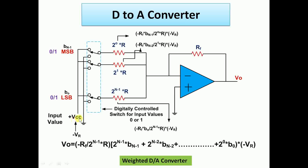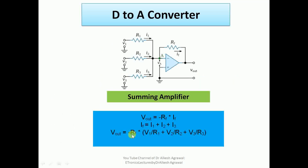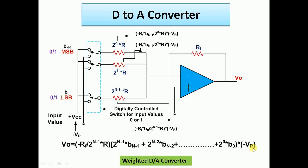The summing amplifier is again used here. For a digital input of 1, the switch connects to +VCC; for 0, it connects to ground. A reference voltage of −VR is used so that, because of the inverting terminal, the final analog output comes out as a positive value. The expression for each arm contributes: for example, the MSB arm gives −RF/(2⁰·R) × BN-1 × (−VR), and the LSB arm gives −RF/(2^(N-1)·R) × B0 × (−VR).